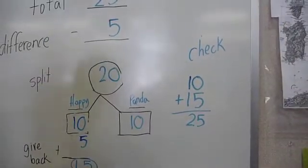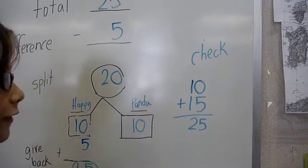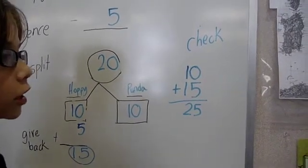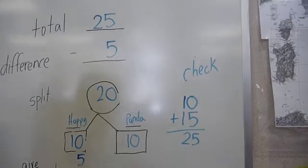If Panda has 10 and Hoppy has 15, we go back to our old total, which is 25.